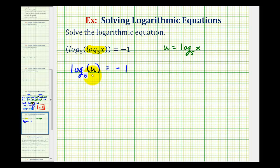So we're going to write this log equation as an exponential equation. So our base is five, the exponent is negative one, and the number is u. So five to the power of negative one is equal to u.